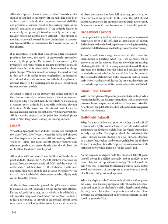For a crosswind takeoff, it is important to establish and maintain proper crosswind corrections prior to liftoff: aileron deflection into the wind to keep the upwind wing from rising, and rudder deflection as needed to prevent weathervaning. Maintaining a positive AOA — tail-low attitude — while accelerating allows a strong upwind aileron deflection to bank the airplane into the wind and provide positive crosswind correction before liftoff. The remainder of the takeoff roll is then made on the upwind main wheel, and as the aircraft leaves the runway, the wings can be leveled as appropriate crab correction is established.